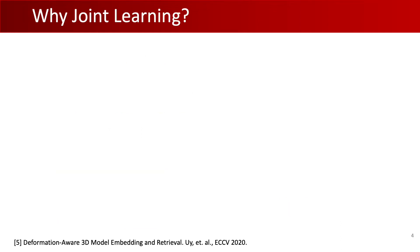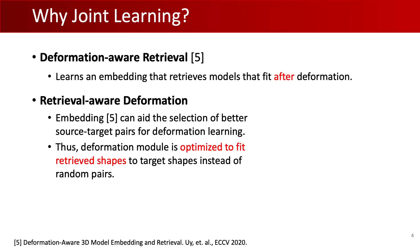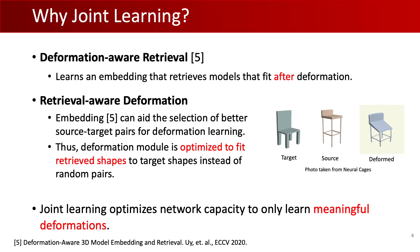As previously explored, deformation-aware retrieval learns an embedding that retrieves shapes that fit after deformation. We further introduced retrieval-aware deformation, where the deformation module is optimized to fit retrieved shapes instead of random pairs, which is suboptimal. The joint learning of these two modules allows us to optimize network capacity to only learn meaningful deformations.